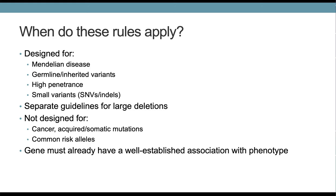Genetic variants have different rules for how you might interpret or classify them. This set of rules is really designed for Mendelian disease — germline or inherited variants — and specifically we're thinking about high-penetrance, generally small variants: single nucleotide variants or indels that aren't of the size where you'd consider them copy number variations. There are separate guidelines for large deletions that are fairly similar to what we'll discuss today, but we won't cover them in detail.